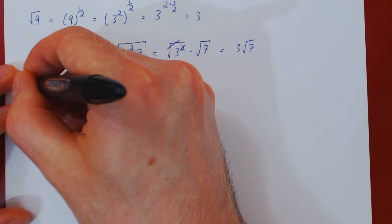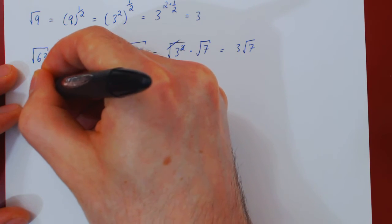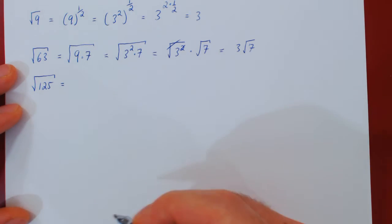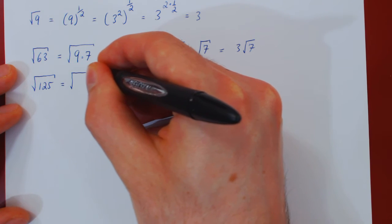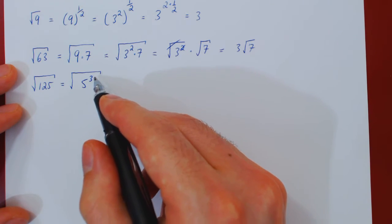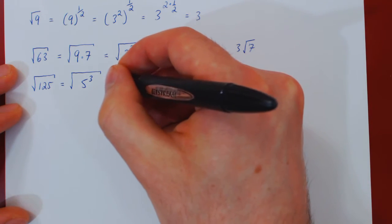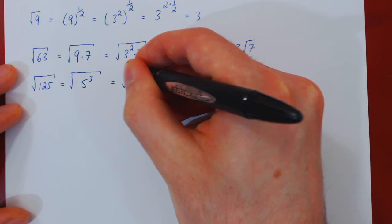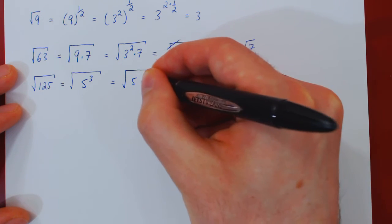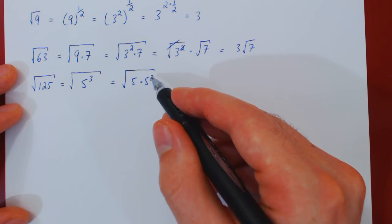What about the root of 125? If we factor 125, this is 5 times 5 times 5, so it's 5 cubed. Now, we don't have here a perfect square, so we can't just cancel this with the square root. But if we simply split the 5 cubed as 5 times 5 squared, now we have here a perfect square.